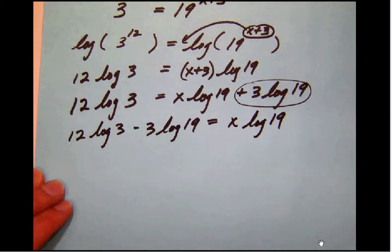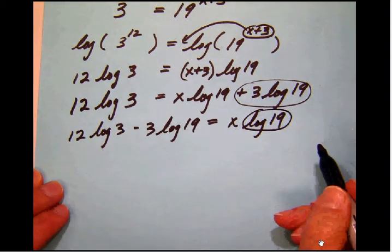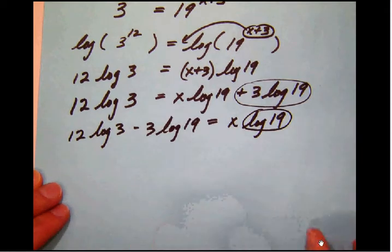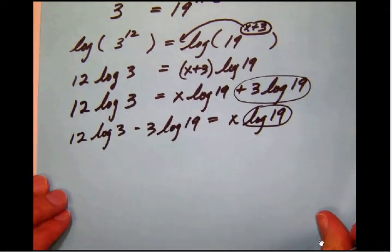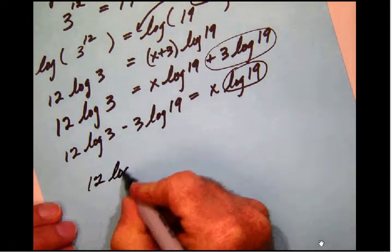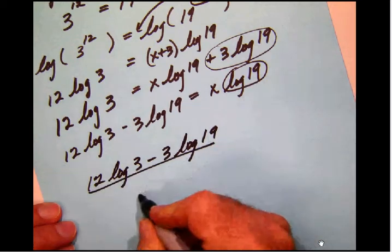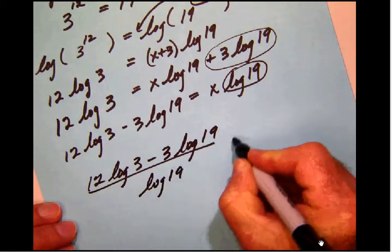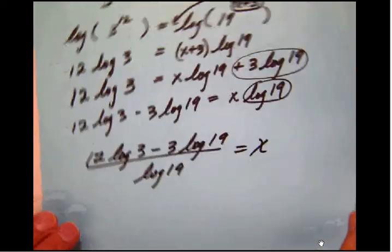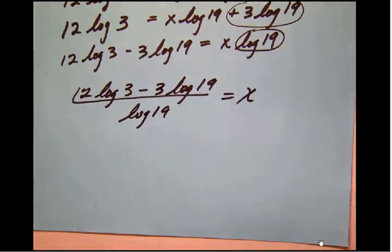Okay, now we're about there. We're going to want to get the x by itself. So we simply want to divide both sides by log 19. So our final answer that we're going to have here is 12 log 3 minus 3 log 19 divided by log 19 equals x. And they want us now to evaluate this expression.